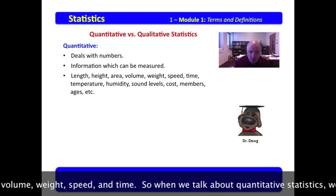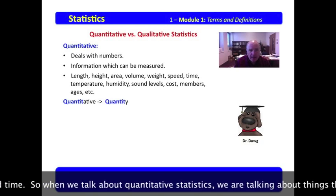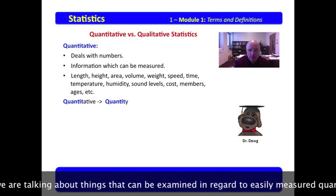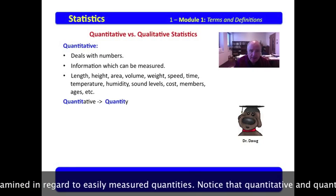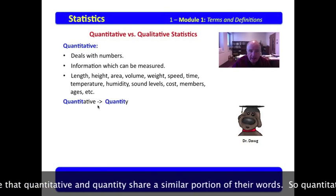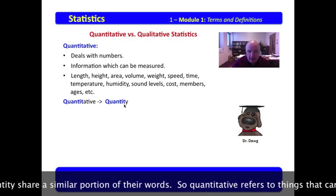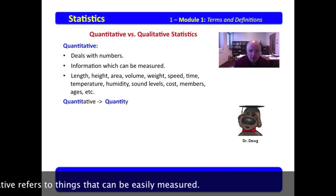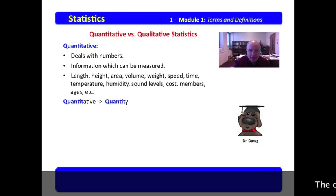So when we talk about quantitative statistics, we are talking about things that can be examined in regards to easily measured quantities. Notice that quantitative and quantity share a similar sound and a similar portion of their words. So quantitative refers to things that can be easily measured.